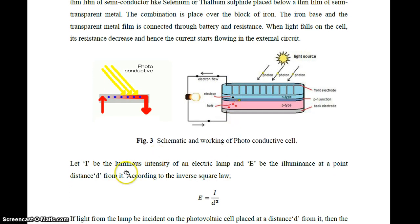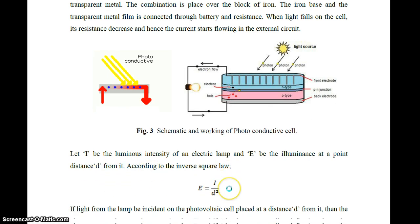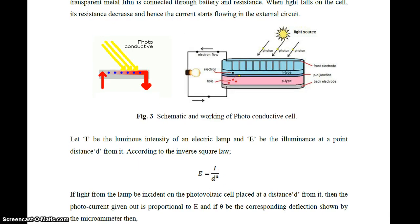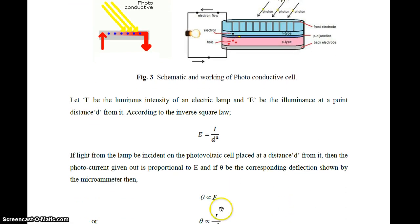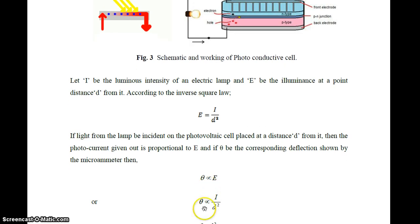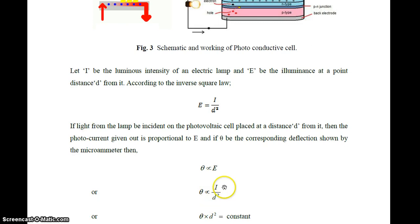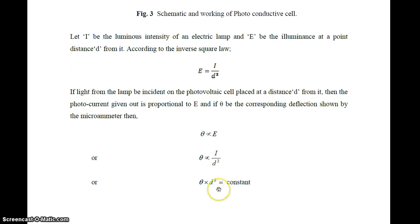Let I be the luminous intensity of the lamp and E be the illuminance at a point at distance d from it. The inverse square law states E = I / d². If light from the lamp is incident on the photovoltaic cell placed at distance d, the photo current is proportional to E, and θ (the deflection shown by the microammeter) is directly proportional to E. Therefore, θ ∝ I / d², meaning θ × d² = constant.